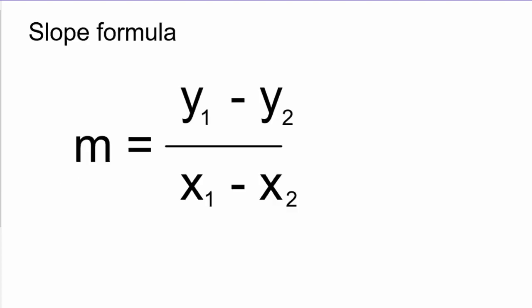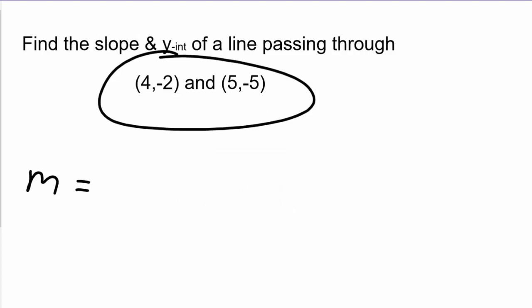The formula again: y1 minus y2 over x1 minus x2. Which one is y1, which one is y2? It's completely up to you - you won't make a mistake if you choose one or another. This is x, that is y. I'm going to choose this as the first one and the next one as the second one, but you can choose either way.